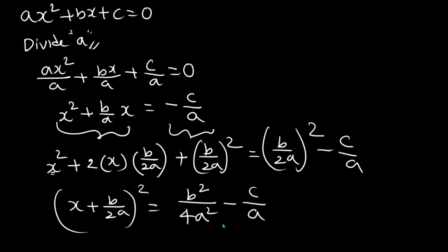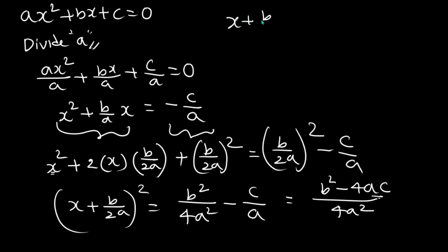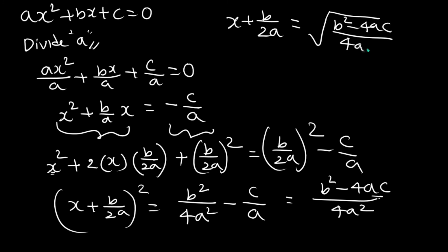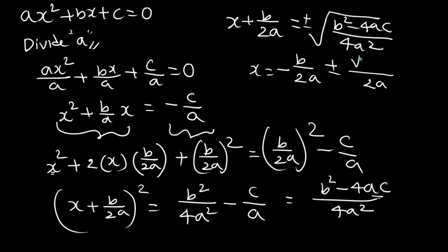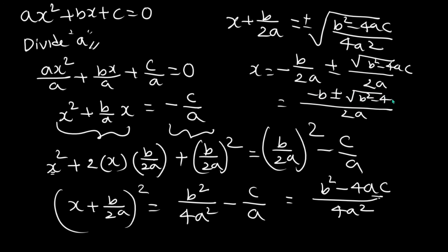This gives us (x plus b/2a) squared equals b squared over 4a squared minus c over a. Taking LCM of 4a squared, the right side becomes (b squared minus 4ac) over 4a squared. So x plus b/2a equals plus or minus square root of (b squared minus 4ac) over 4a squared. The square root of 4a squared is 2a, so x equals minus b over 2a plus or minus square root of (b squared minus 4ac) over 2a, giving us the formula: minus b plus or minus square root of b squared minus 4ac, all divided by 2a.